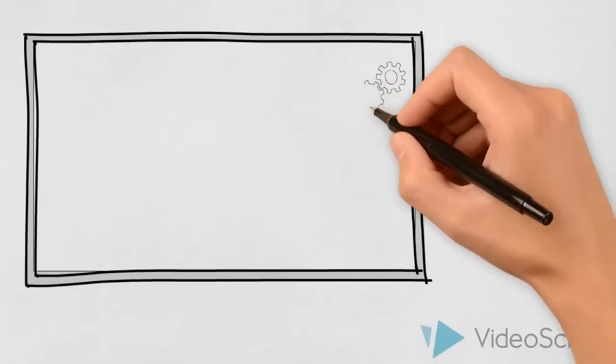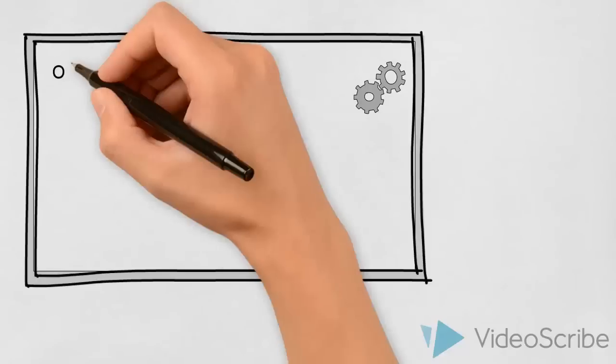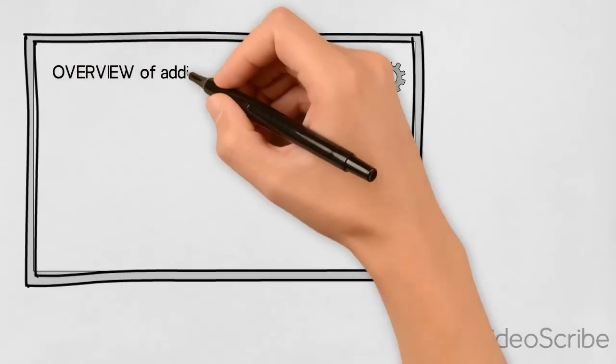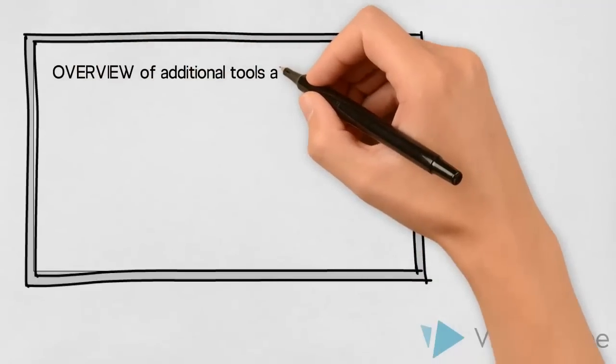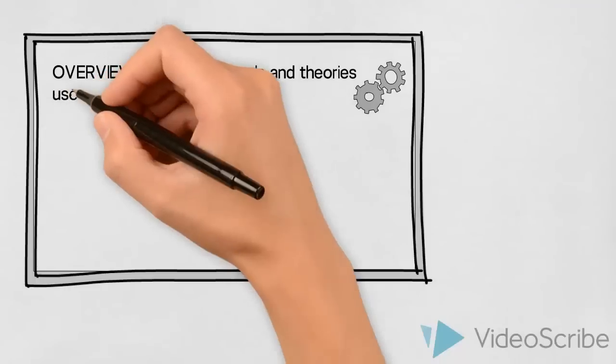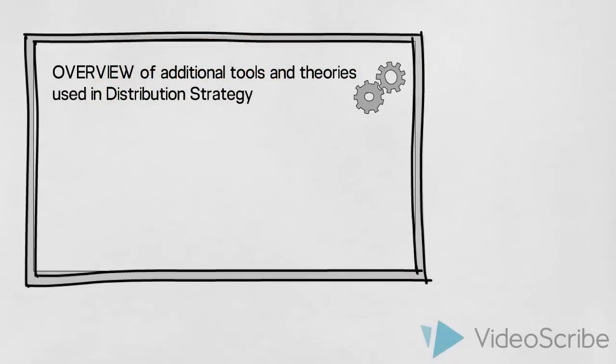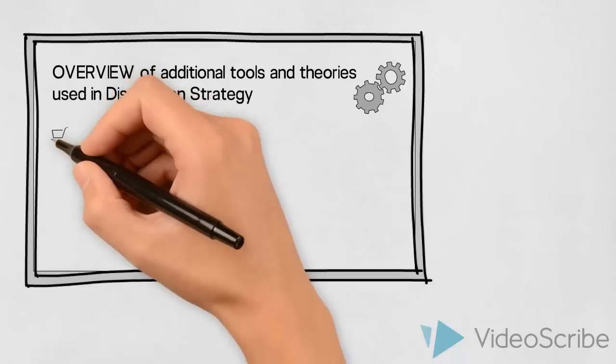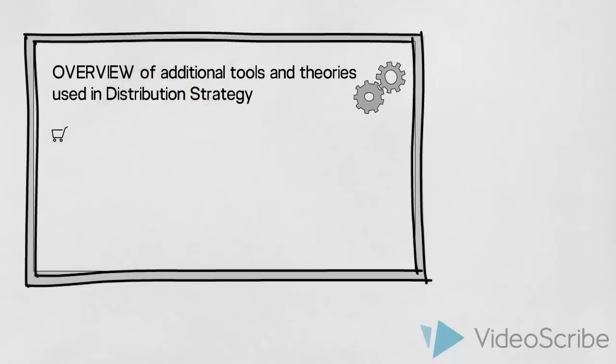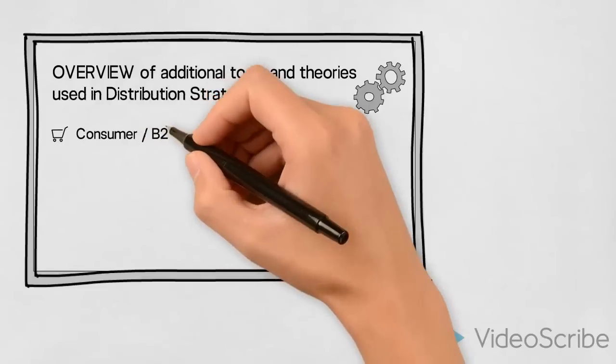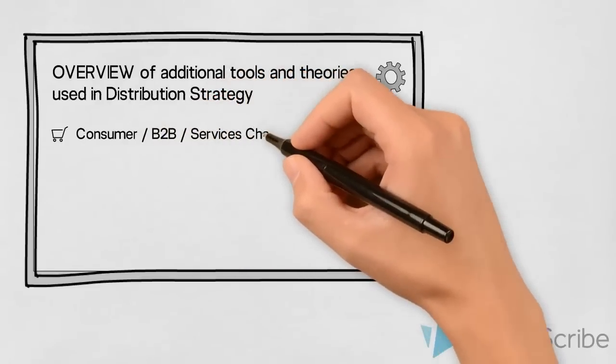In addition to the factors we have just discussed, we as marketers have some additional tools and theories we can use to guide us when determining which distribution channels to use. These will not be described in detail in this video, but let us just introduce an overview of some of the tools and theories we might want to use. We would determine whether we are dealing with consumer, B2B, and or services distribution channels.